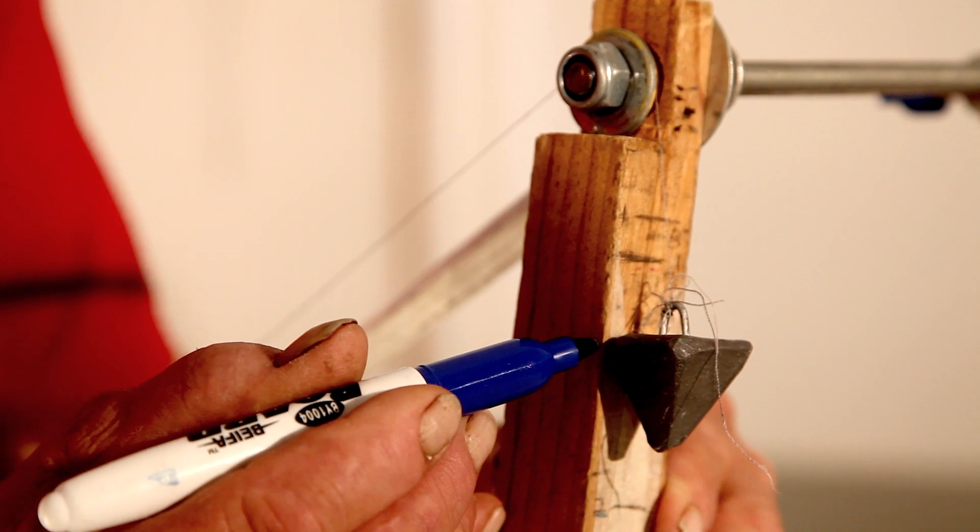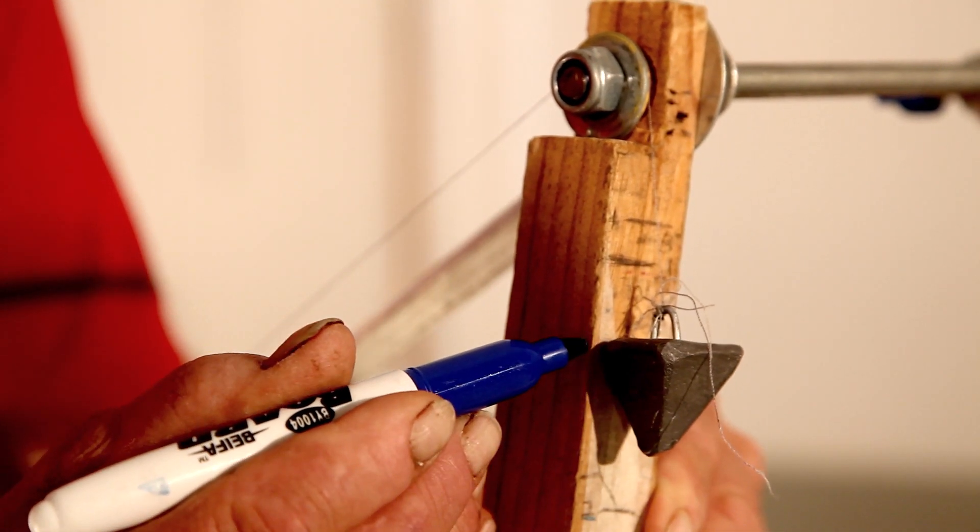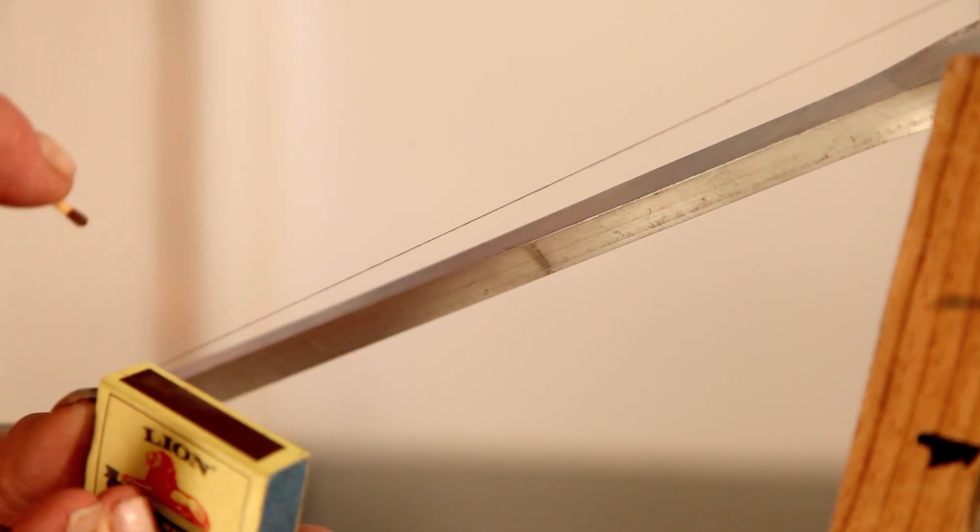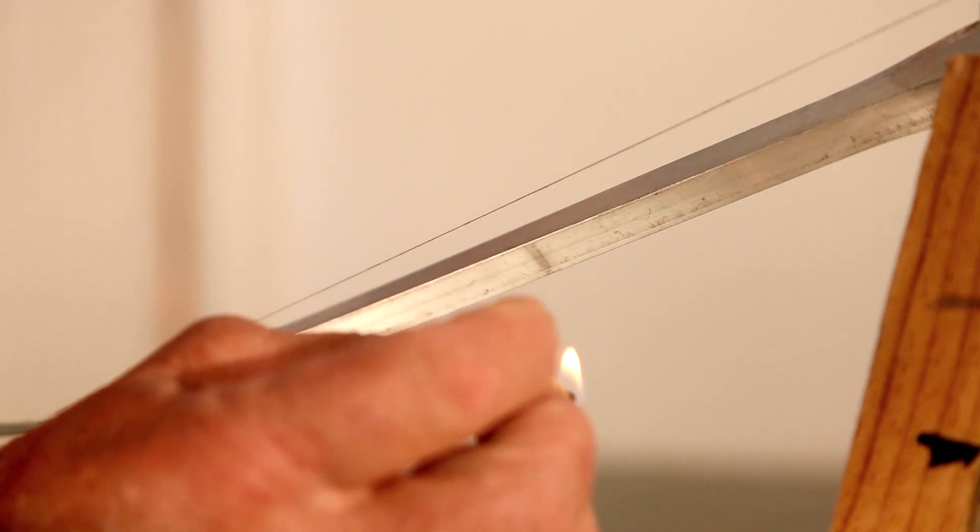Mark the position of the mass piece on the pendulum at the start of the experiment, and then using a match, burn the cotton thread.